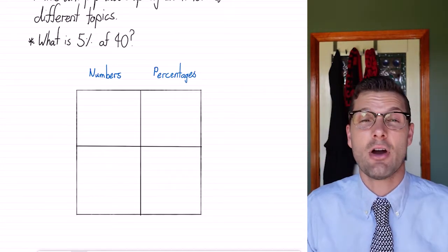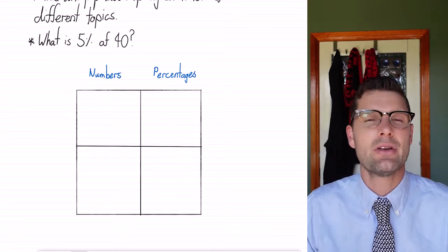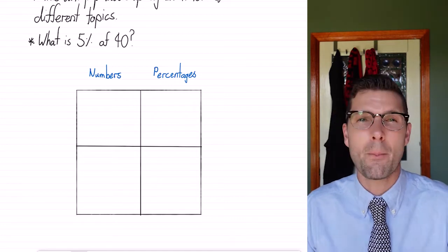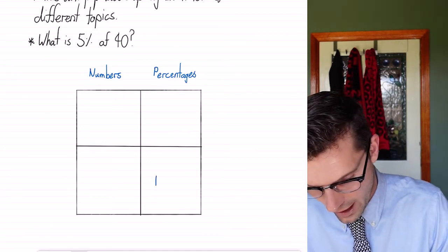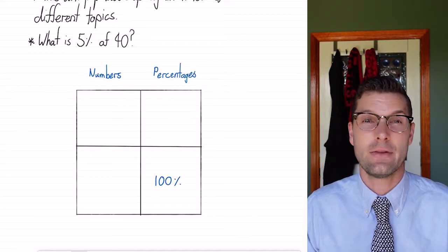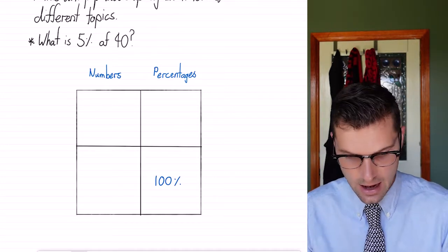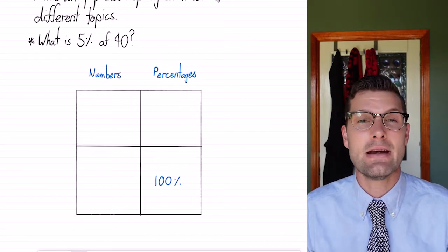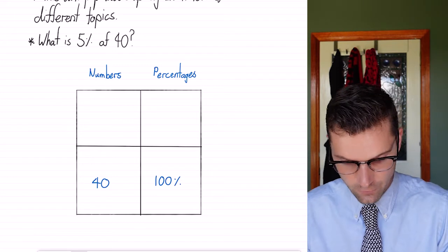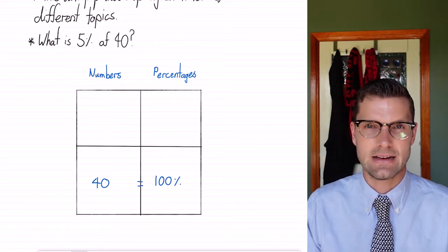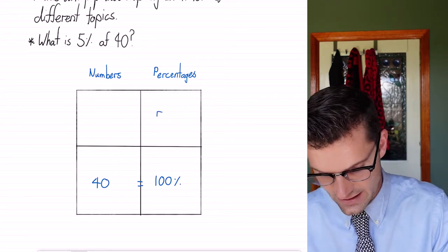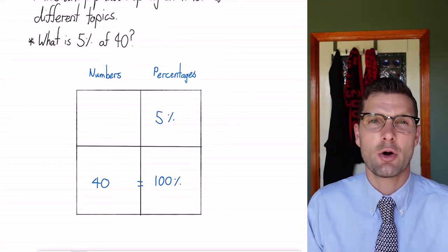You do not need to write these down as we go through proper examples, but just for this first one we'll have it there just to make sure. In the bottom corner we know that we've got 100% always. We've got 100% and that's our initial amount. And we've been told that our initial amount is 40. So the box is just saying that 40 equals 100%. And we're trying to find 5%. So that's what we're looking for.